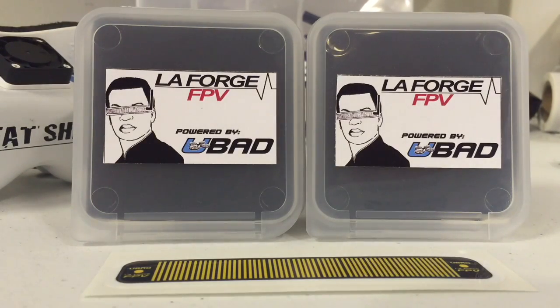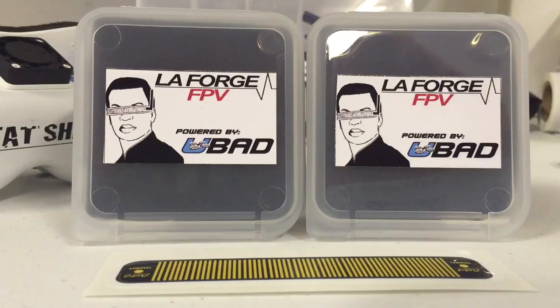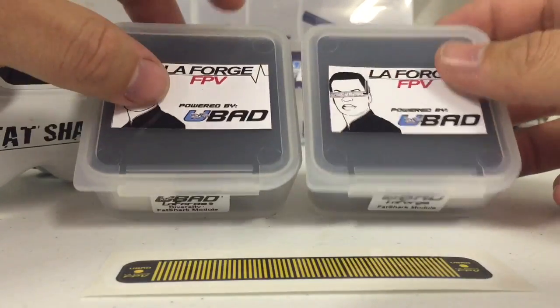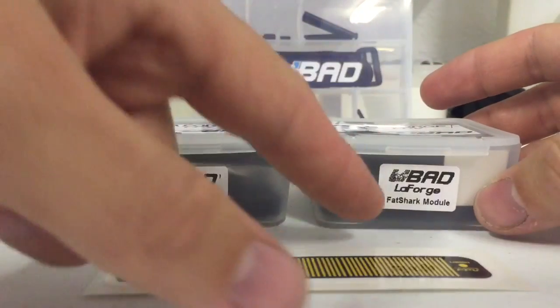If you just bought the regular module, then you didn't get a beeper, so you won't hear the tones that we're going to hear, which is basically just when you control it. You're going to get both the FatShark module and the diversity module.